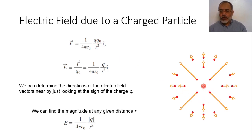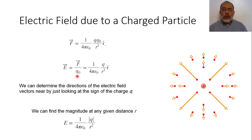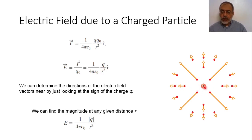The R direction is going from the center of the charge toward the test charge. As we said, the electric field is defined as the force over the magnitude of the test charge — F over Q naught. So according to Coulomb's law, the electric field would be 1 over 4π epsilon naught multiplied by the charge Q over R squared, in the direction going from the origin or center of the charge outward in the R direction.